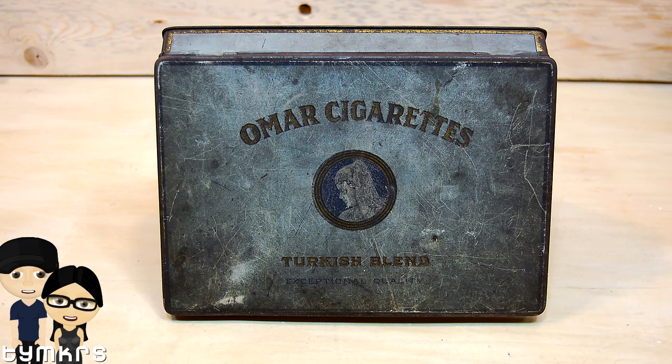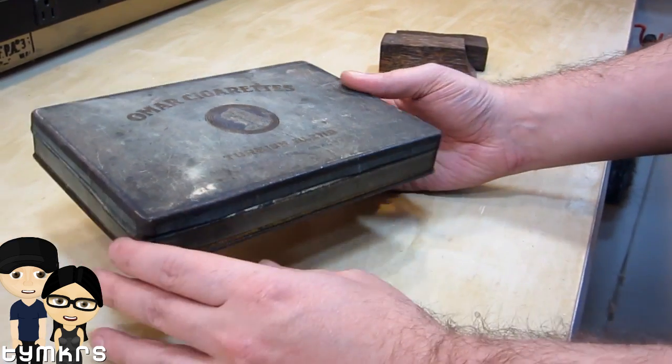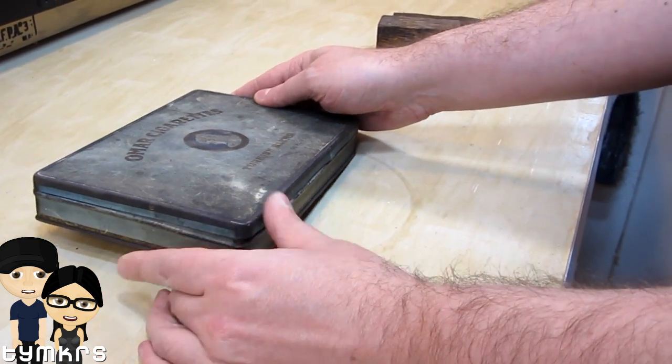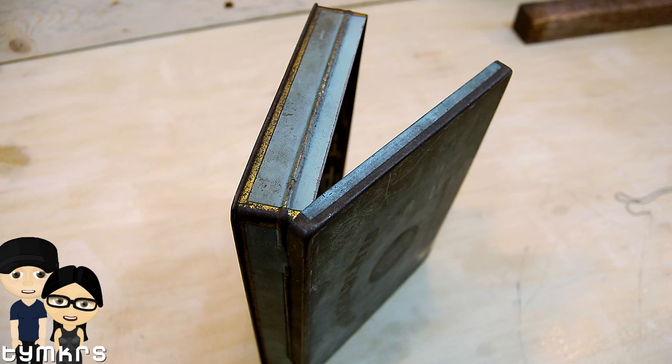So we found this. Omar Cigarettes Turkish blend. Exceptional quality. Alright, so what this is is a tin cigarette case from the 1920s.